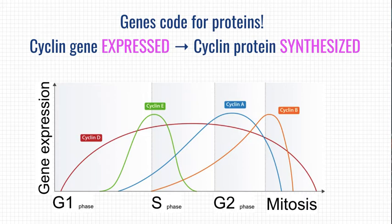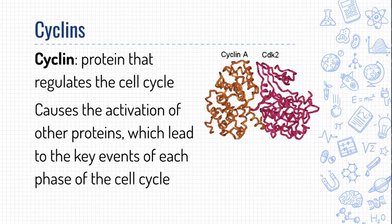The spike of cyclin B recruits cyclin-dependent kinases, which phosphorylate many different proteins involved in the events of mitosis. Because of the increase of cyclin B, several downstream effects result in the important steps needed for mitosis to go forward. Similarly, cyclin E spikes before S-phase because it's involved in proteins necessary for DNA replication. The summary is that cyclins spike in association with different parts of the cell cycle and cause the activation of the proteins that carry out the events of that phase.